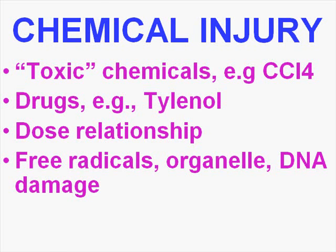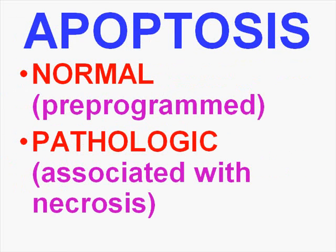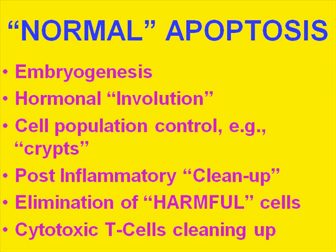Let's talk about apoptosis now. We already defined it as pre-programmed normal cell replacement, and we said it was different from pathologic death which is associated with all the previous things we talked about which caused necrosis. Apoptosis comes from the Greek word which means falling off. So normally when you have cells in embryos which have to go away for the embryo to differentiate, to grow, to become something else, that's a normal apoptosis process.